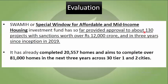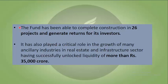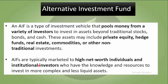SWAMIH has so far provided approval to about 130 projects with sanctions worth ₹12,000 crore. In the 3 years since inception in 2019, it has already completed 20,557 homes and aims to complete over 81,000 homes in the next 3 years across Tier 1 and Tier 2 cities. The fund has completed construction in 26 projects and generated returns for its investors. It has also played a critical role in the growth of ancillary industries, having unlocked liquidity of more than ₹35,000 crore.